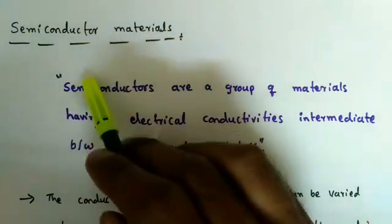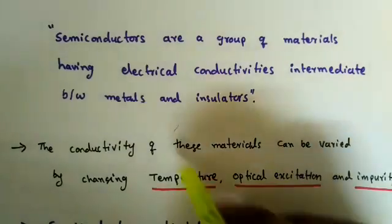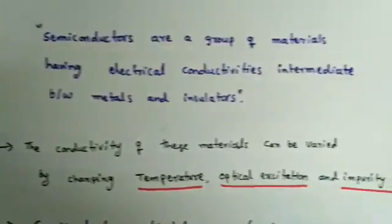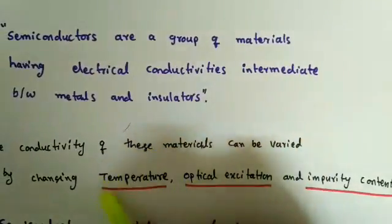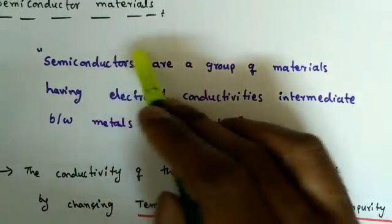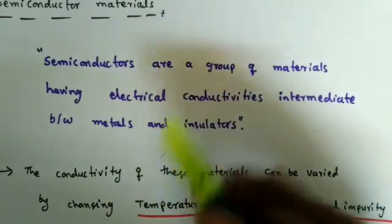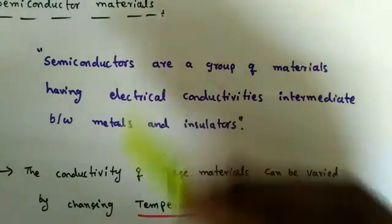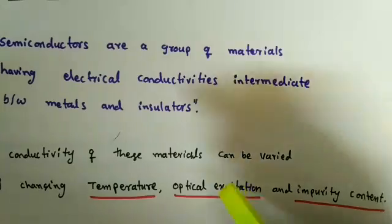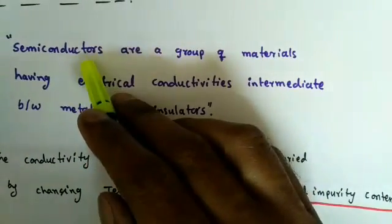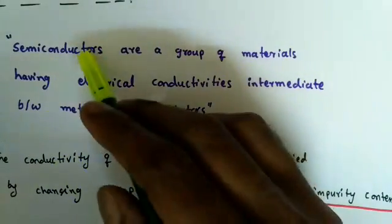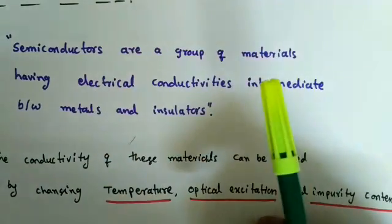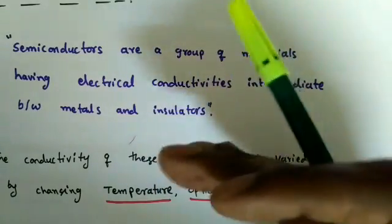In semiconductors, the conductivity varies depending on different mechanisms, so we can vary it. The conductivity of semiconductor materials can be varied by changing the temperature, optical excitation, or impurity content. If I increase the temperature, we can increase the conductivity of that material. Optical excitation means if I shine some light on the semiconductor, the conductivity will change — some electron-hole pairs will be generated, contributing to current flow.